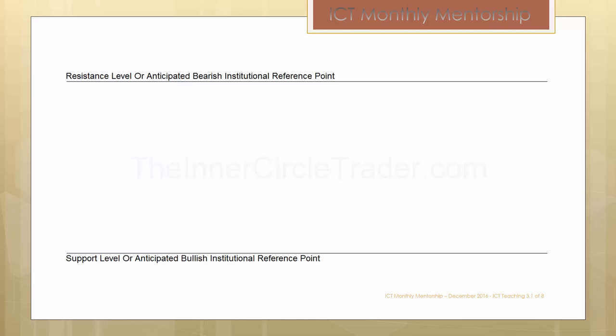When we're looking at a market that is moving up into a potential bearish resistance level, the market will typically move up into an old high. It could be an old low, it could be a bearish order block, it could be a breaker, or a multitude of things that would lead your opinion into the realm of resistance. There are multiple opportunities to frame that idea of resistance.